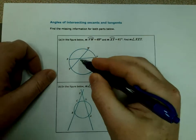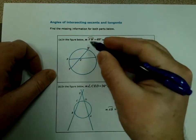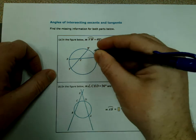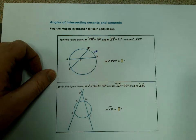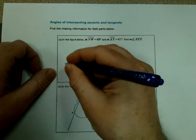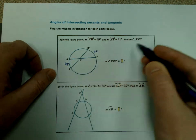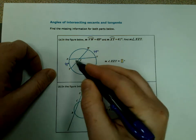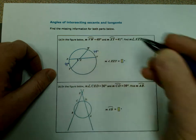So this one is inside the circle, so let's fill in what we know. We know VW, so over here, is 49 degrees, the measure of that arc. And then the measure of arc XY over here is 41 degrees. And we're trying to find the measure of angle XZY, so we're trying to look for this one right here.